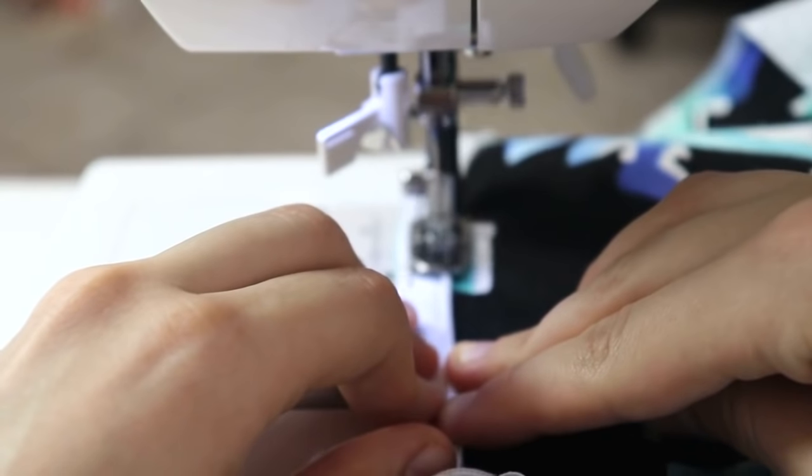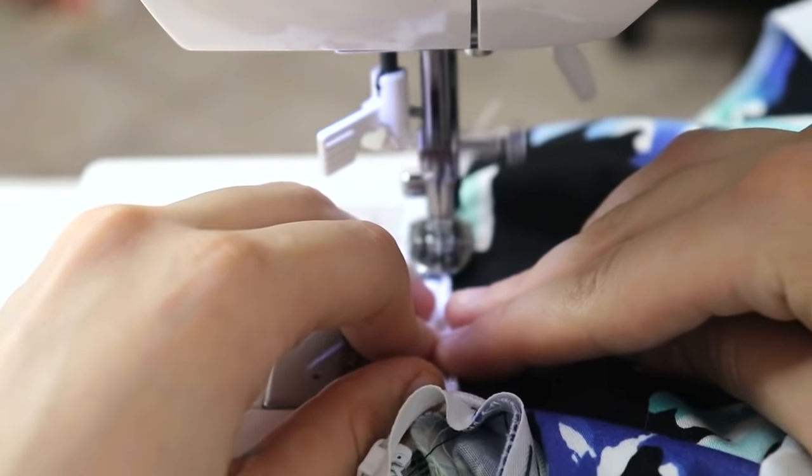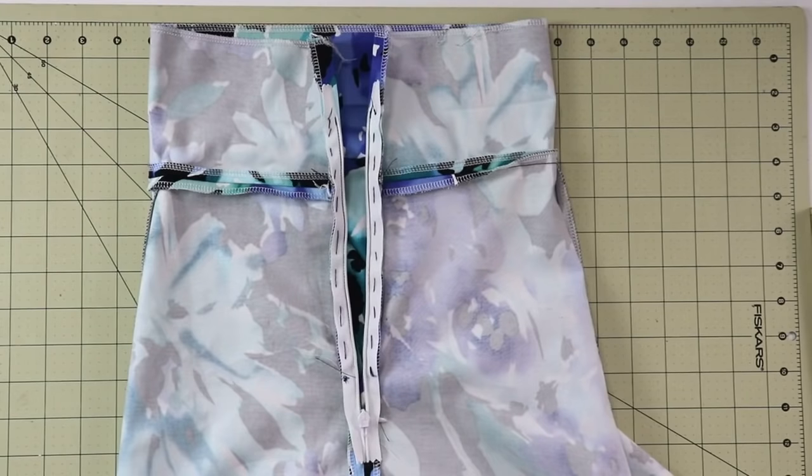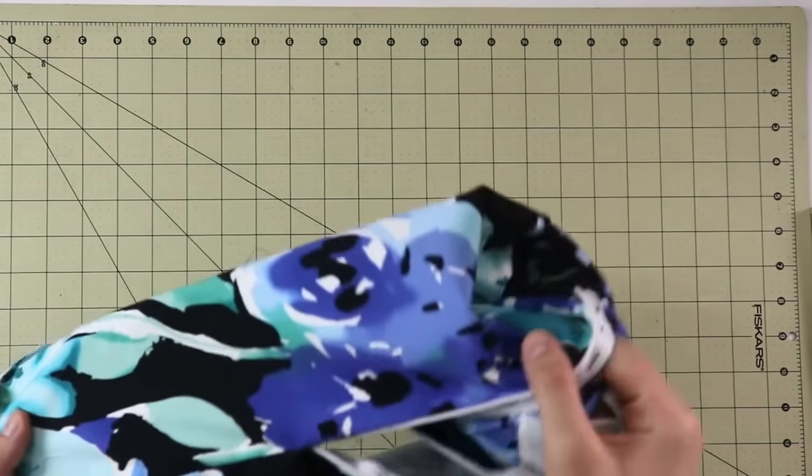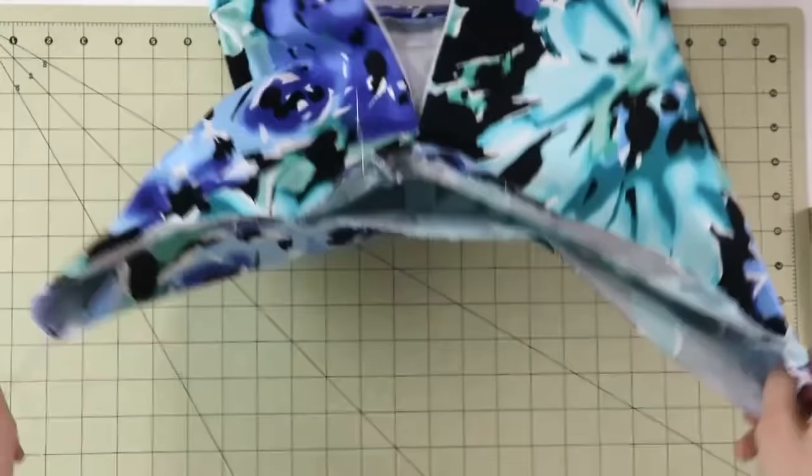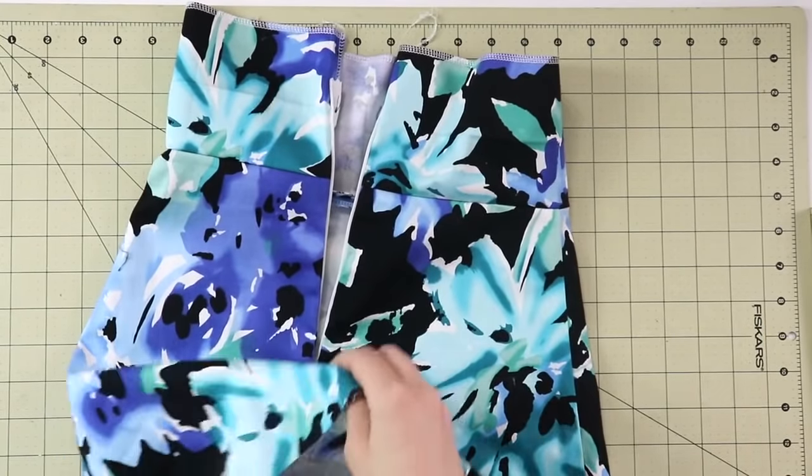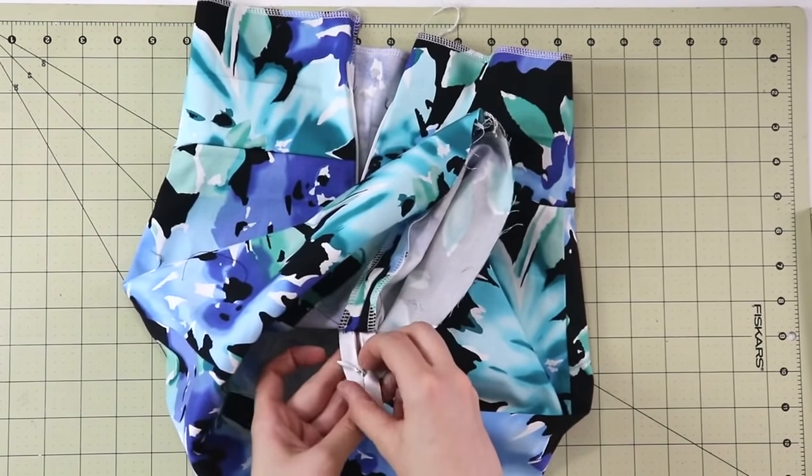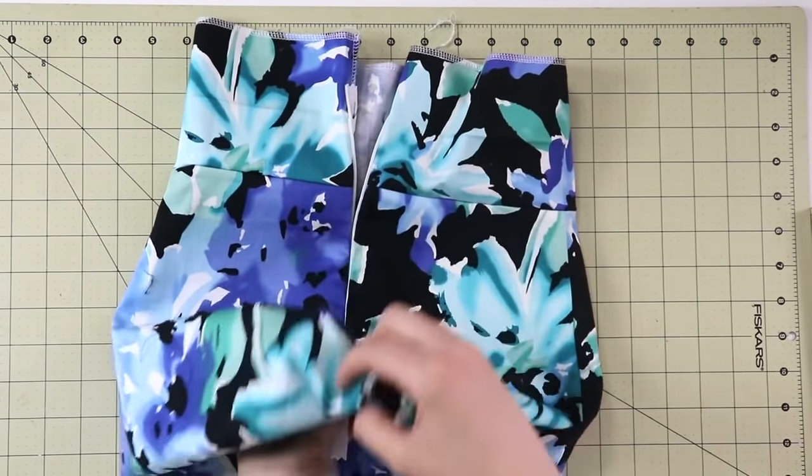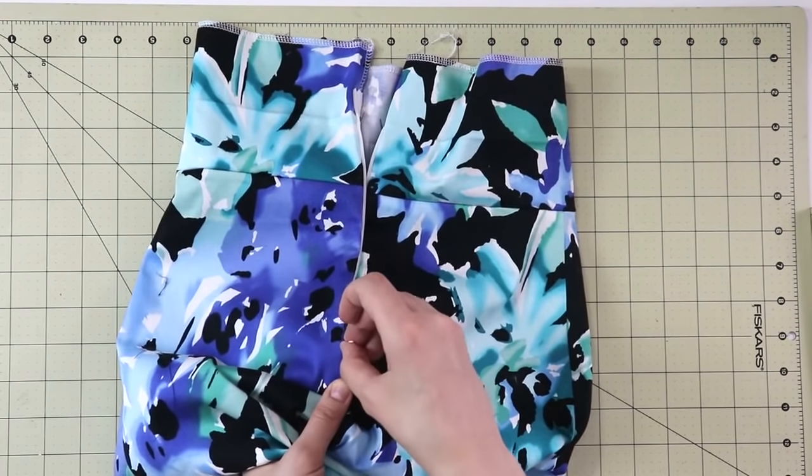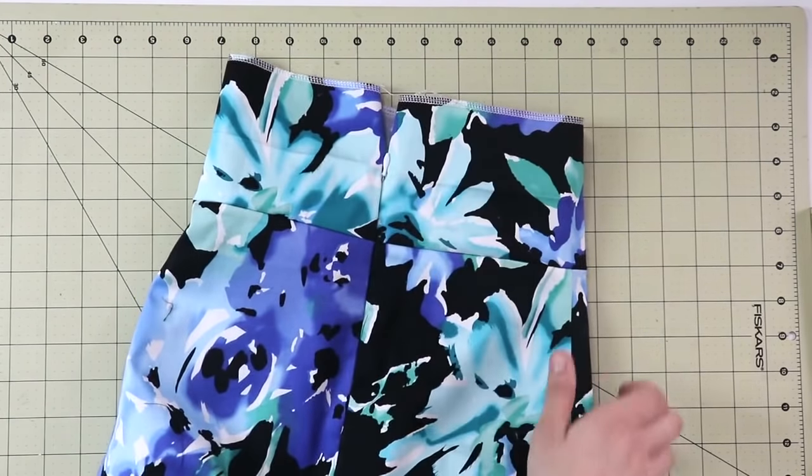Alrighty, we are so very close. Once you're done attaching your zipper with your invisible zipper foot, go ahead and close it. Definitely double check that everything really is matching nice and neat. And right now you can go ahead and remove the hand basting stitches that we did. And of course, give it a really good press so that it's nice and crisp.